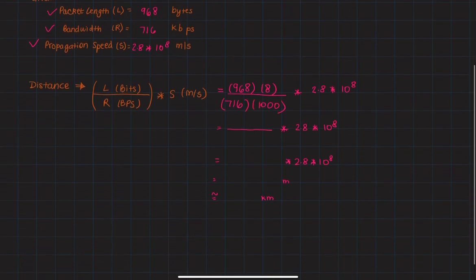That gives us 7744 bits in the numerator and 716,000 in the denominator.